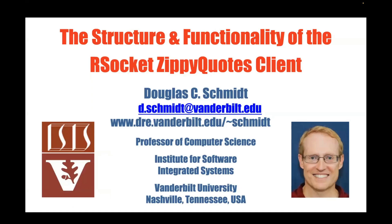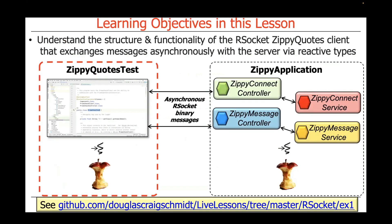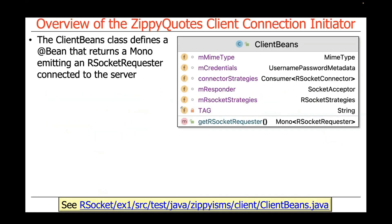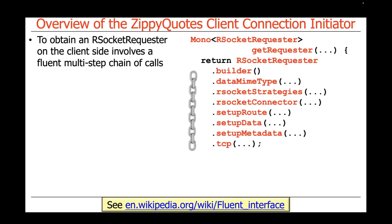We're now going to talk about the structure and functionality of the ZippyQuotes client, which sends connection requests and messages asynchronously with the server. This has two main parts. It has a ClientBeans class, which does all the heavy lifting of getting things connected by creating an RSocket requester that's connected to the server. In order to do this, we have to make a bunch of calls.